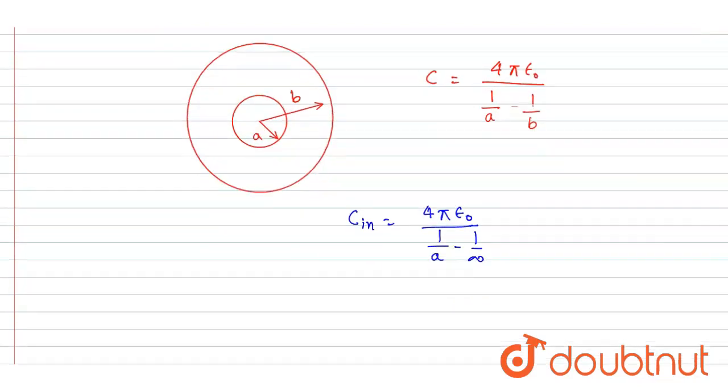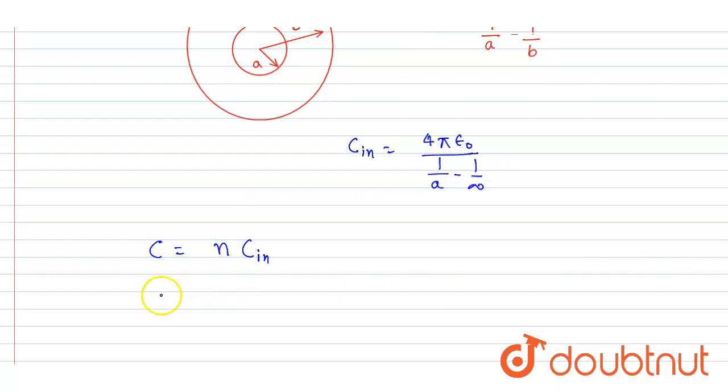So it is given here in the equation that c is n times of c initial. Okay, put the value here. Now the capacitance is this.